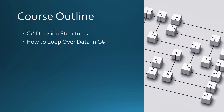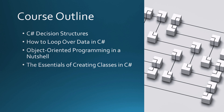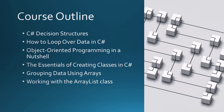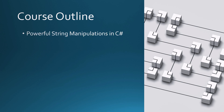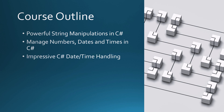We'll talk about how to loop over data. We'll talk about object-oriented programming and give you the basic foundation of that. We'll create a class in C-Sharp so you can see how to add properties and methods. We'll talk about grouping data using arrays and working with the ArrayList class. We'll also see the powerful string manipulations available in C-Sharp. We'll talk about managing numbers, dates, and times, and the impressive C-Sharp DateTime handling available to you.